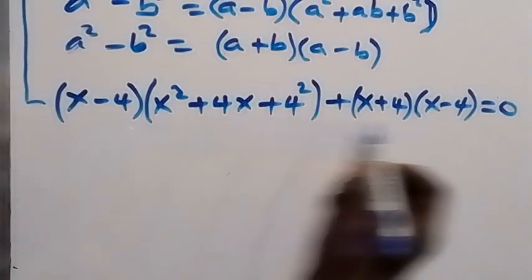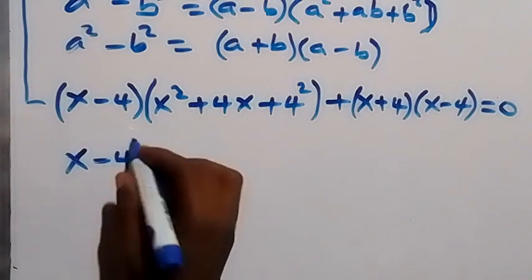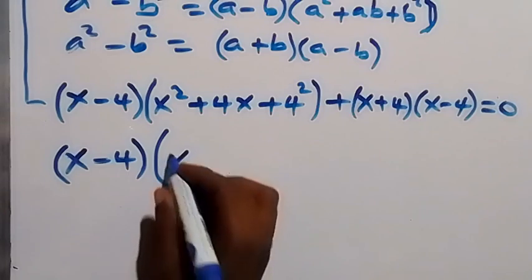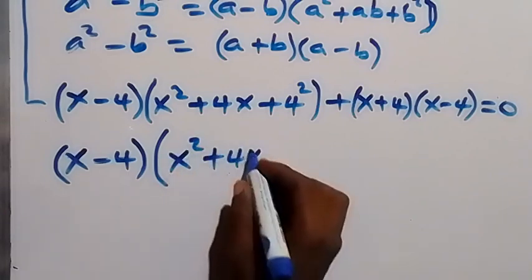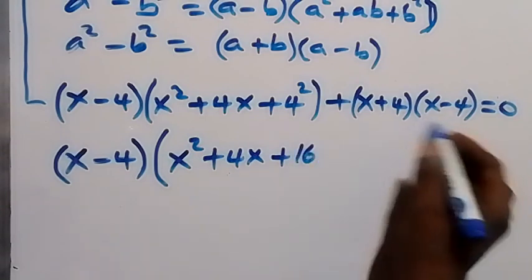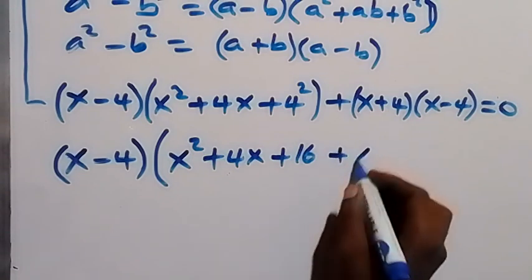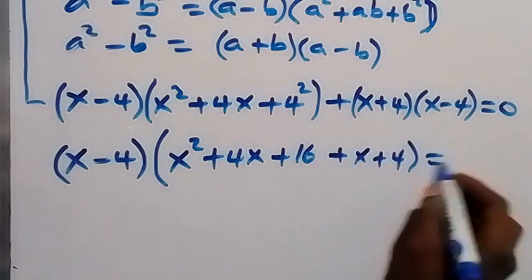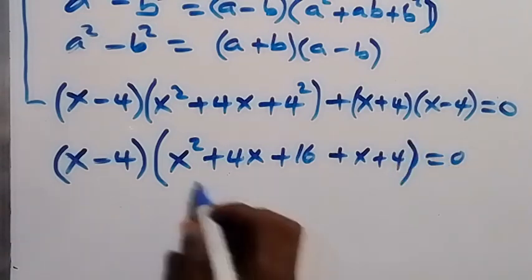We can see that (x − 4) is a common factor. Taking it out, we have (x − 4) times what remains. From the first term we are left with x² + 4x + 16, and from the second bracket we are left with (x + 4), all equal to zero.